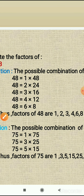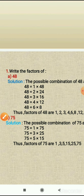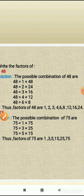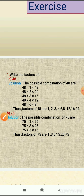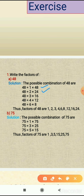So the factors of 48 are: 1 and 48, 2 and 24, 3 and 16, 4 and 12, and 6 and 8. These are the factors of 48. Now we will find the factors of 75.